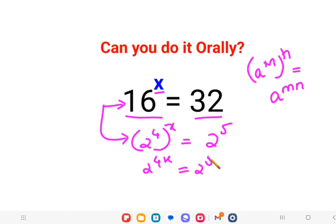Now since if you look closely, the bases are same, so I can directly equate the indices. So I can say 4x equals to 5, therefore I can say the value of x is nothing but 5 upon 4.